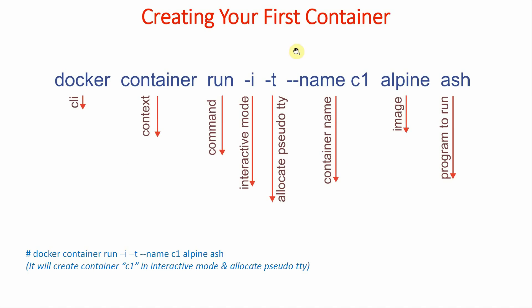For creating the container, the command is: docker container run -i -t, then we specify the name of the container — in our case we are going to give the name c1 — from which image you want to create the container, in our case alpine, and which program to run — in this case we are going to run the shell, that is ash. The -i flag means interactive mode, so it will create the container and take us into it, and -t will allocate a pseudo TTY.